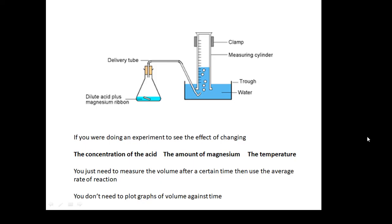If you are doing an experiment to see the effect of changing the concentration of the acid, the amount of magnesium, the temperature, you really just need to measure the volume after a certain time and then work out the average rate of reaction. You don't need to take lots and lots of readings of volume against time. If you're changing the concentration of the acid,